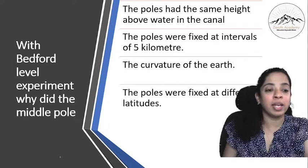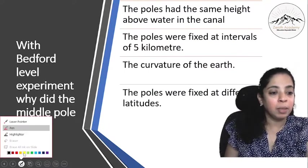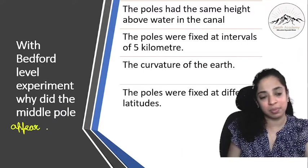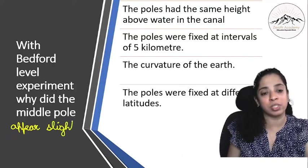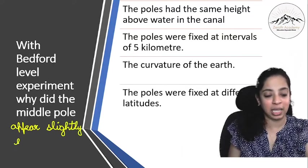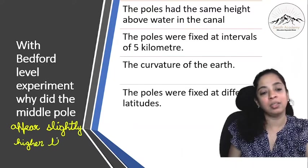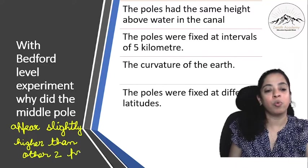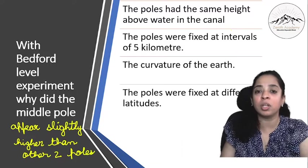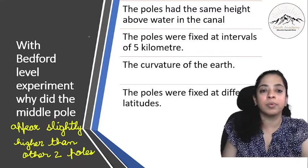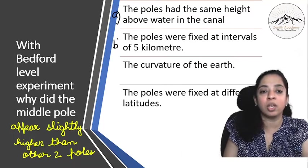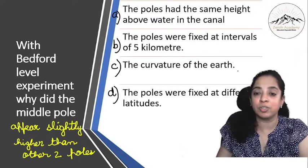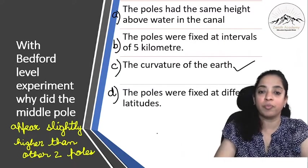Next, with Bedford level experiment, why did the middle pole appear slightly higher than the other two poles? So what is the reason? The poles had the same height above the water in the canal, or the poles were fixed at intervals of 5 km, or because of the curvature of Earth, or because the poles were fixed at different latitudes? So yes it is because of the curvature of the Earth.